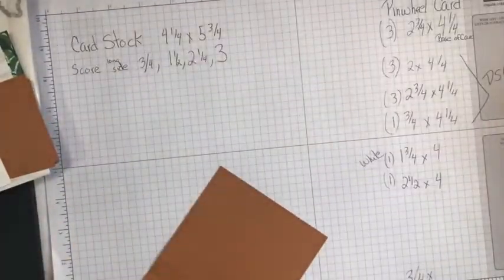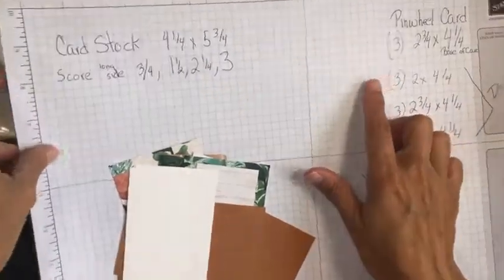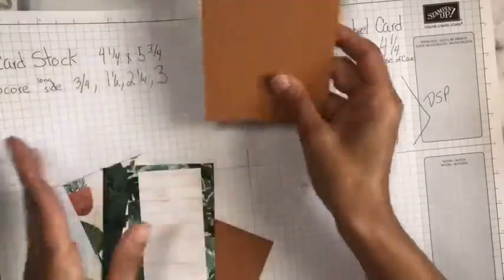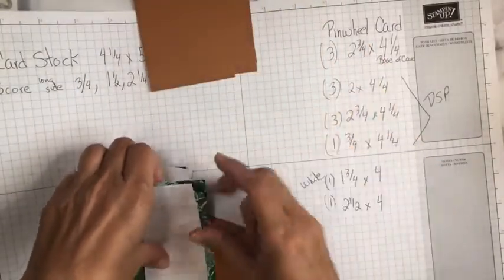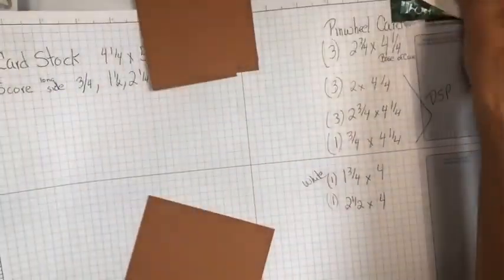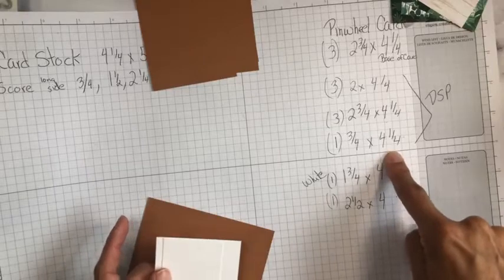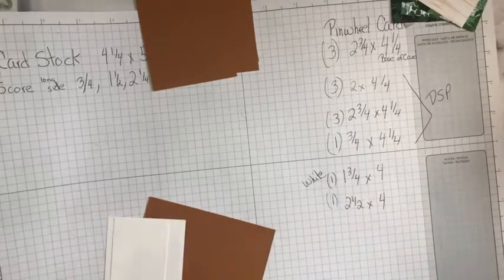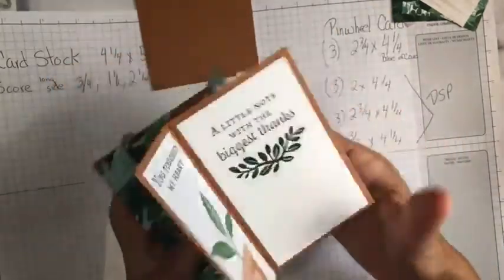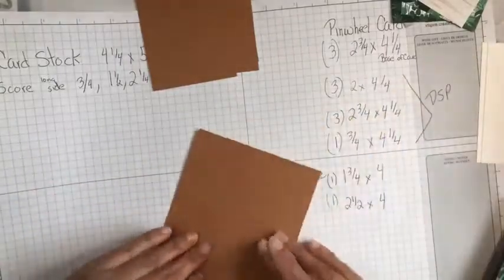You're also going to need pieces of paper. You're going to need three pieces that are two and three quarters by four and a quarter. And then you're going to need three, two inches by four and a quarter. I've already cut them and I've put them in the little sections that I want to adhere them to. You could also use a three and a quarter by four and a quarter. Then I did white strips. These are one and three fourths by four and two and a half by four. There's lots of different ideas on the internet. It's called a pinwheel card.